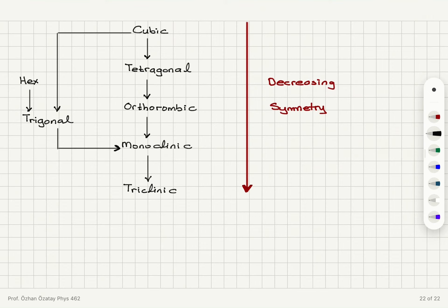Cubic has the highest amount of symmetry. By distorting cubic we also obtain trigonal, and it is also possible to obtain monoclinic by distorting a trigonal structure. Hexagonal structure has higher symmetry compared to trigonal structure.